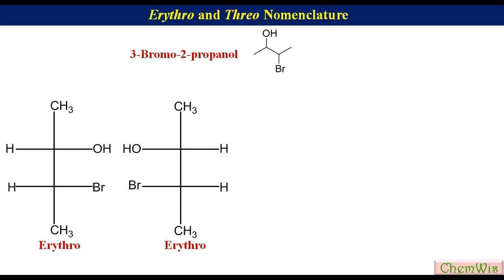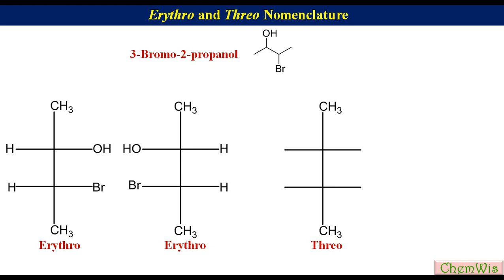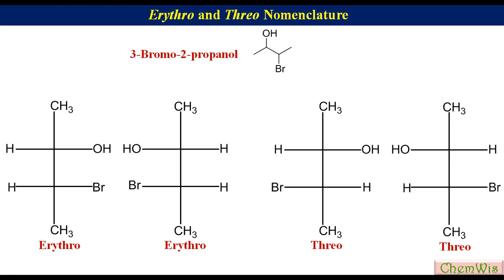For drawing one of the two threo isomers, draw an 'A' skeleton for the Fischer projection and put the methyl groups on the vertical lines. Place one H on the left and the other on the right, then put OH on the right and Br on the left. The second threo isomer will be its enantiomer, like this.